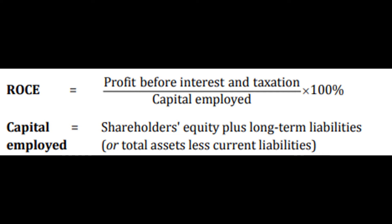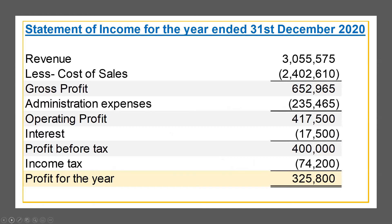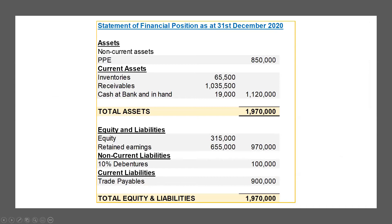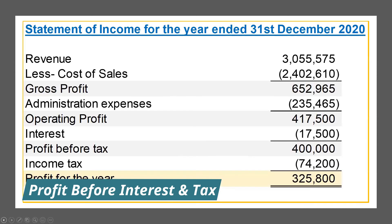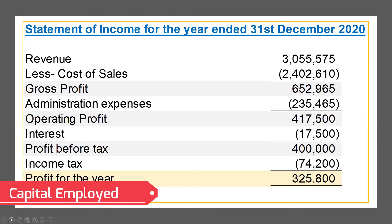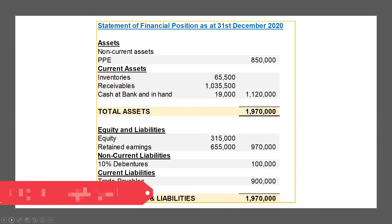This is how we calculate return on capital employed. Now let's take an example and calculate ROCE based on the given information. You are given the income statement and financial position of a company, and we need to identify the two components: the profit before tax from the income statement and the total capital employed from the financial position.